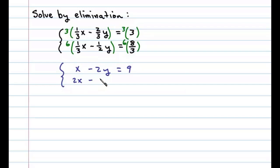6 times negative 1 and 1/2 Y is 3Y equals 6 times 8/3 is 16. Now we can eliminate the variable X.